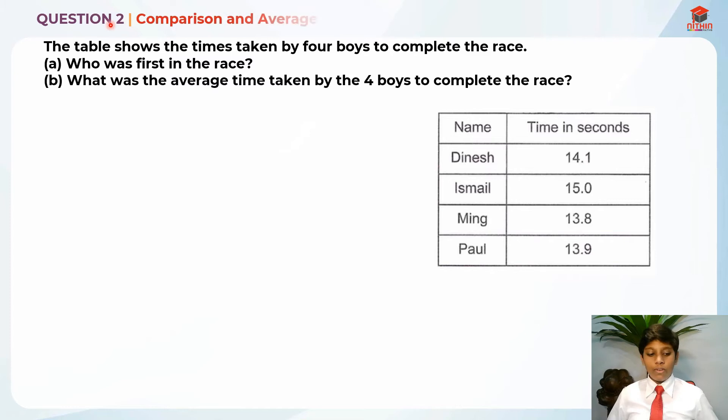This is question 2 and this question is testing us on comparison and average. So let's read for part A first. The table shows the times taken by 4 boys to complete the race: Dinesh, Ismail, Ming and Paul.